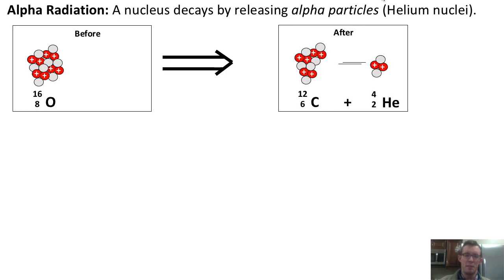Hey, Comteam. So there's a couple of types of radiation that we'll discuss in this class. The first type is alpha radiation, which occurs when a nucleus decays by releasing alpha particles.